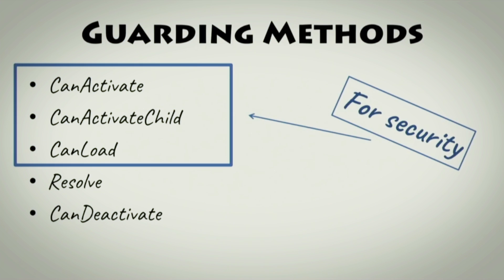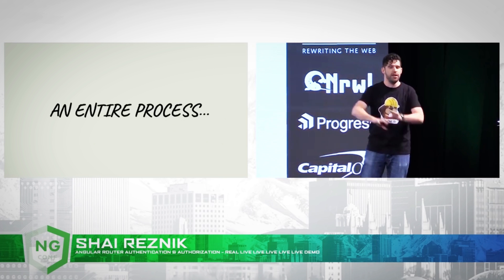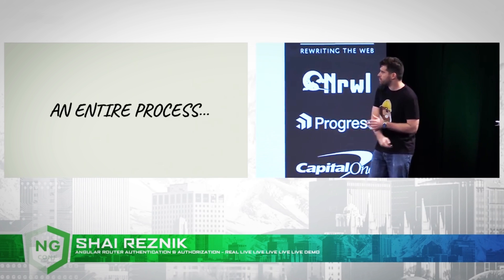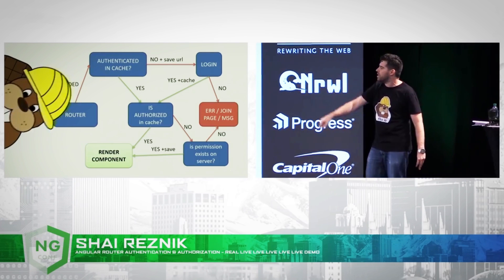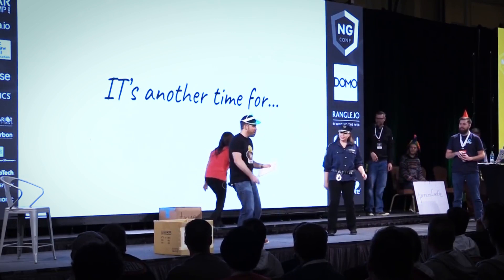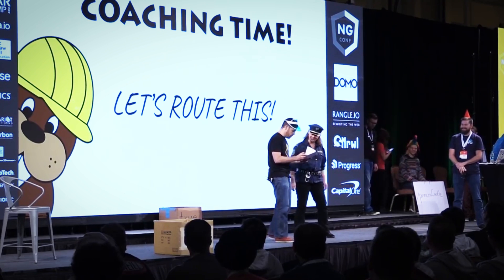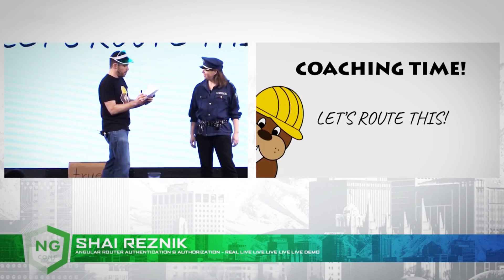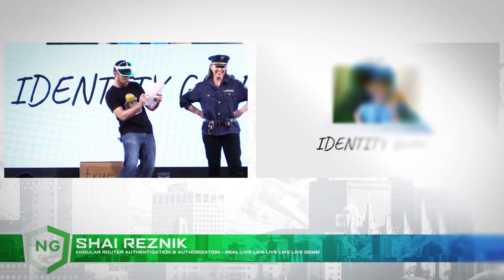Only these three guards can activate and handle security — the other ones are not relevant. We have the entire process behind all of that: the user hits the router, it gets to the authentication guard. Okay, coaching time — let's route this. You are the identity guard, and you rush to...